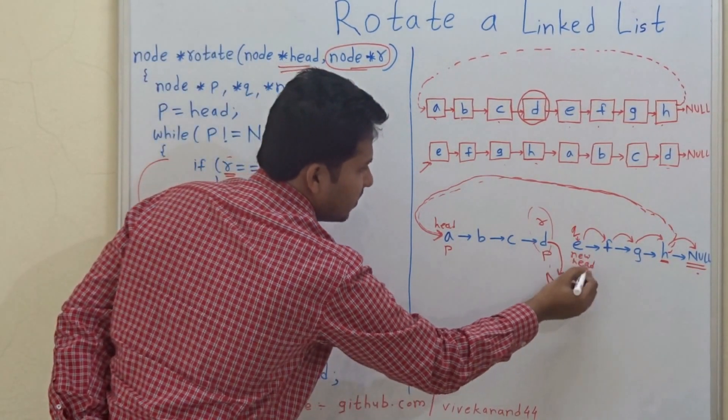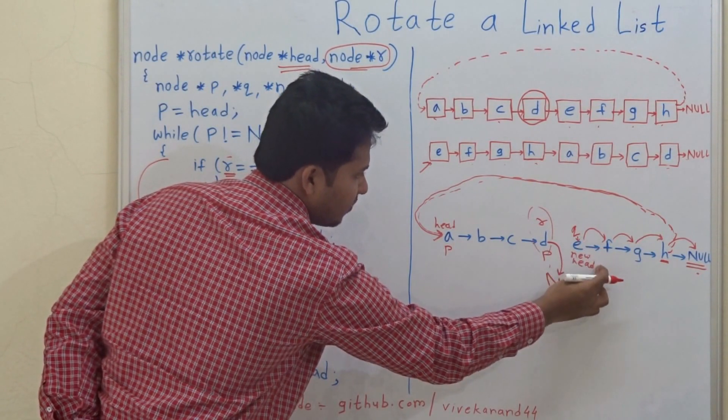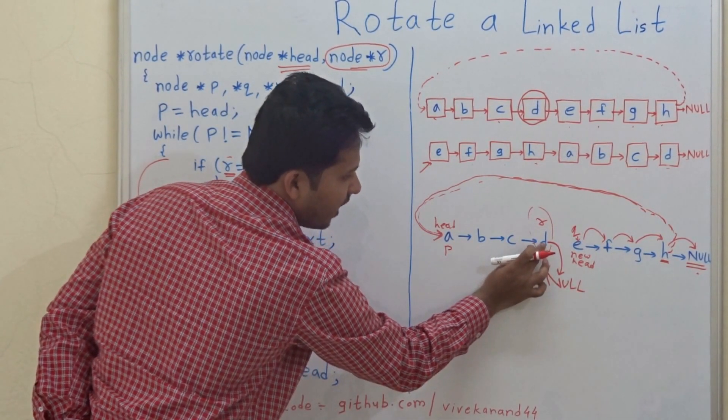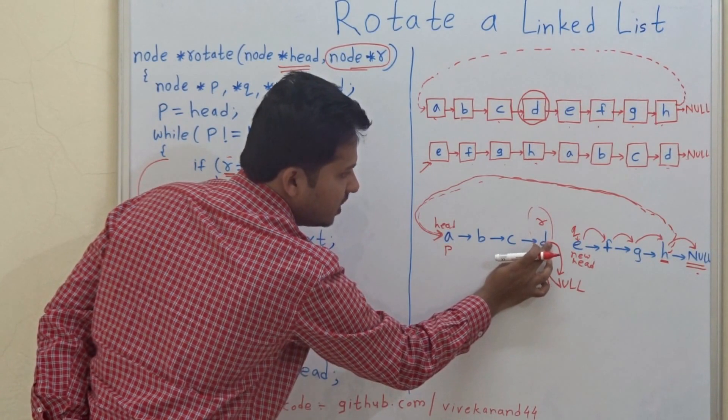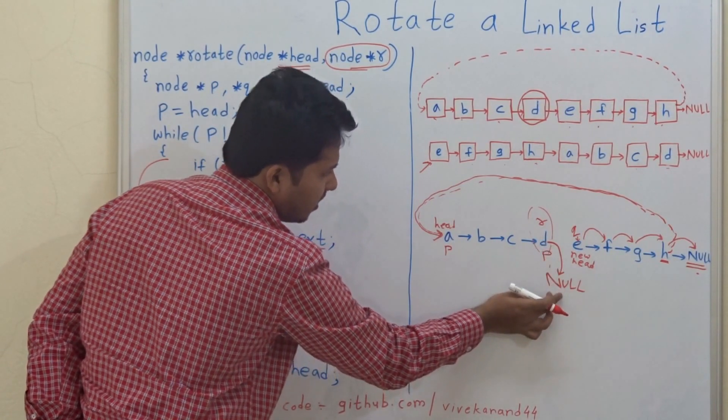And this is our new head. E is our new head and D is our last node now. We have made the next pointer of D as null.